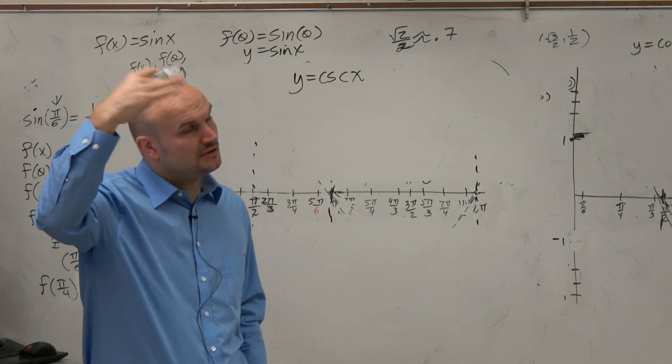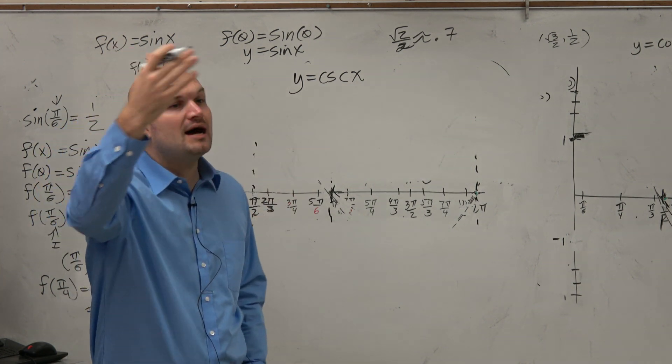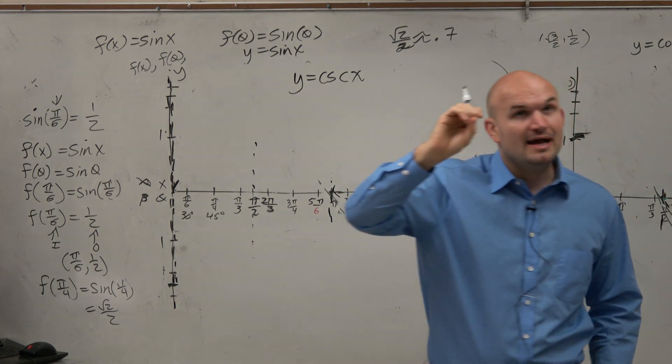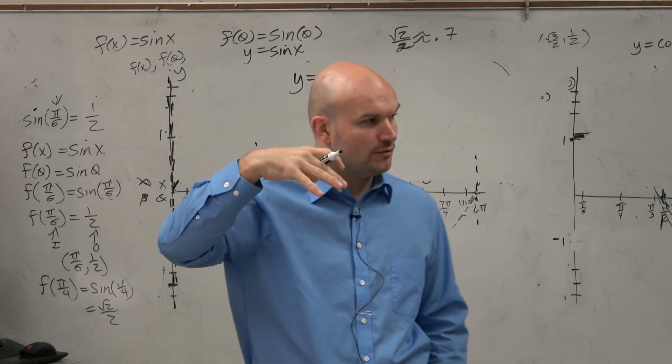In a triangle, the sine of an angle is opposite over hypotenuse. The cosecant was hypotenuse over opposite. When we think about points on the unit circle, the sine coordinate was y, and the cosecant was 1 over y.